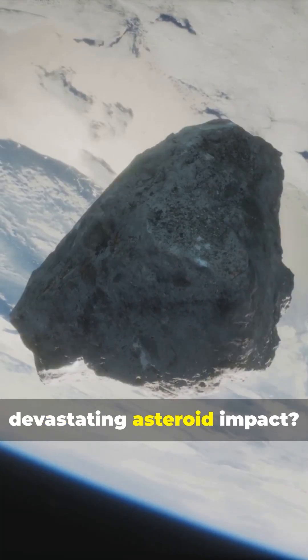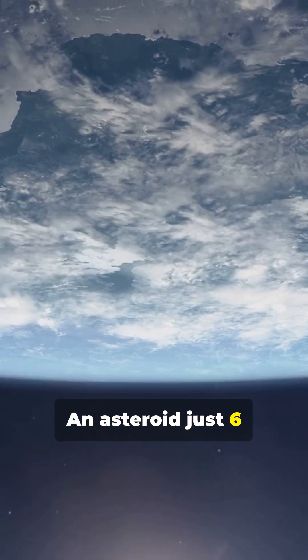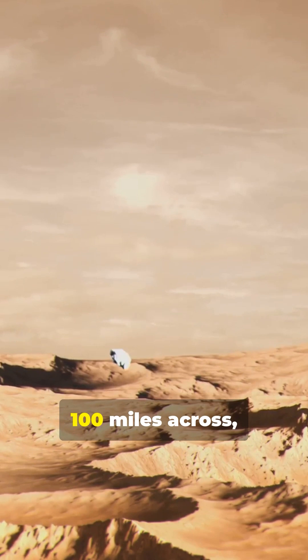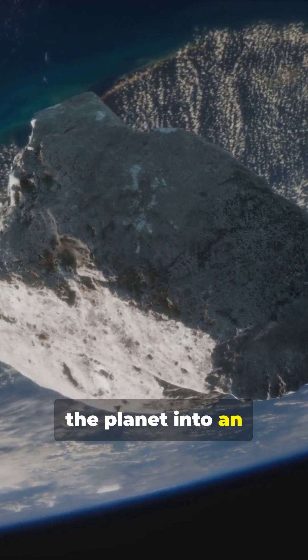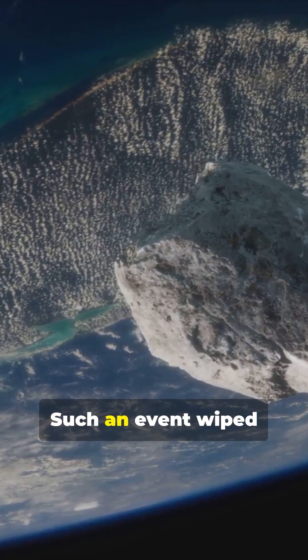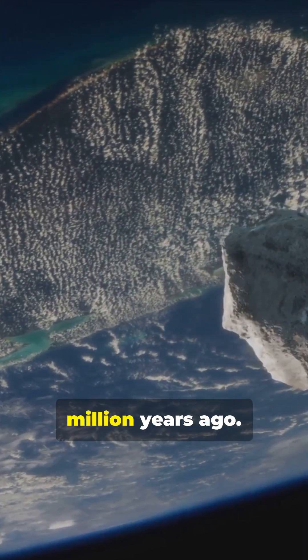Could Earth face a devastating asteroid impact? An asteroid just six miles wide could create a crater over 100 miles across, triggering massive tsunamis and plunging the planet into an asteroid winter. Such an event wiped out the dinosaurs 66 million years ago.